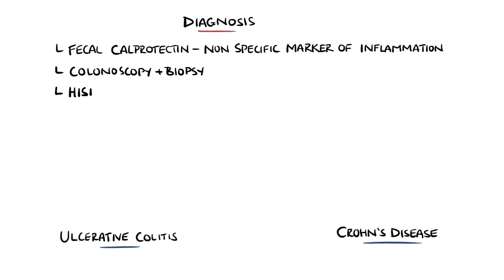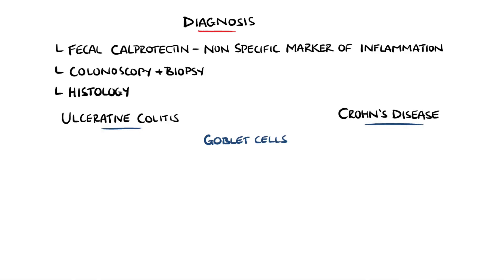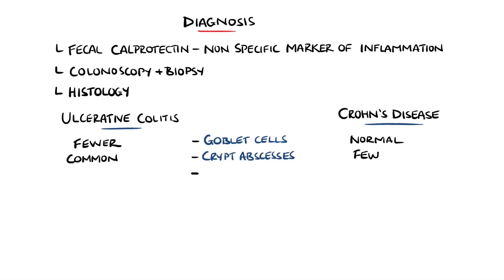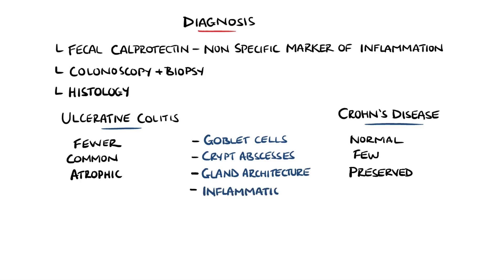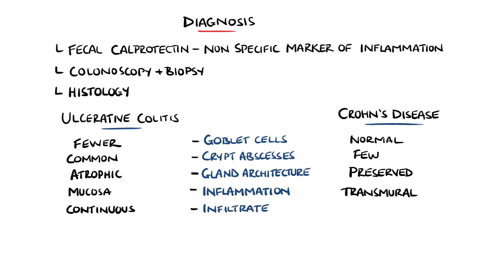Looking specifically at the histology, goblet cells are fewer in ulcerative colitis while they are often normal in Crohn's disease, and there are also fewer crypt abscesses in Crohn's disease. The architecture of the glands is better preserved in Crohn's disease than in ulcerative colitis. The inflammation is mostly limited to the mucosa in ulcerative colitis and is transmural in Crohn's disease. The associated inflammatory infiltrate is continuous in ulcerative colitis and patchy in Crohn's disease. As Crohn's disease is a granulomatous disease and ulcerative colitis is not, the presence of granulomas on histology is another key difference.